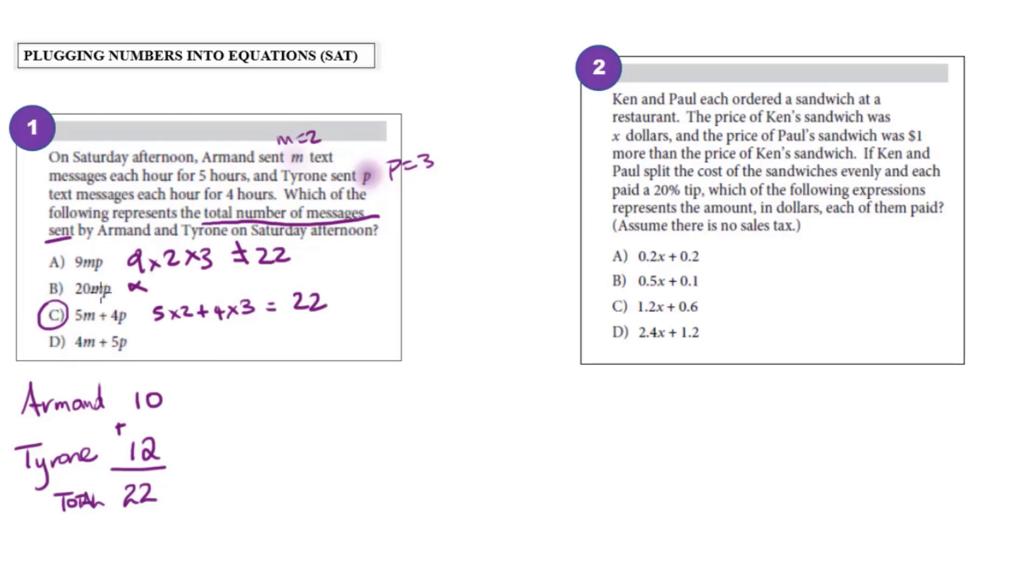Just to make sure I could try it in D, because if I did, it would be four times two plus five times three, four times two is eight, five times three is 15, and eight plus 15 is 23. So that would not be equal to 22.